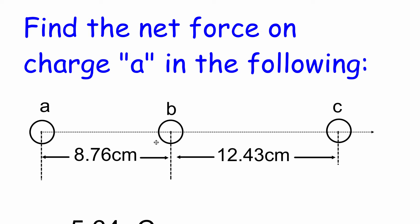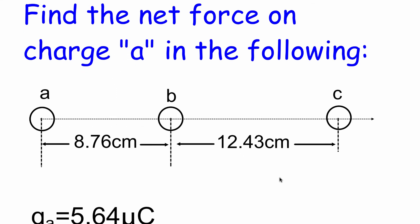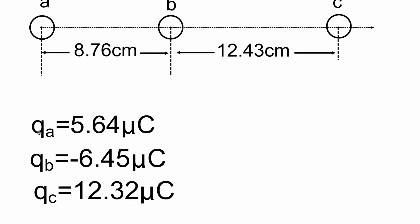We've got a situation where we've got three charged objects: A, B, and C. They've got the distances of separation mapped out, and we want to figure out what the net force is going to be on charge A. QA, the charge on object A, is 5.64 microcoulombs. The charge on B is negative 6.45 microcoulombs, and the charge on C is 12.32 microcoulombs. So A is a positive charge, B is a negative charge, and C is a positive charge.